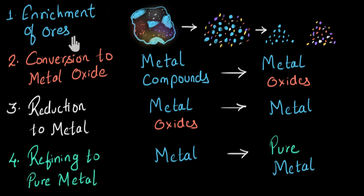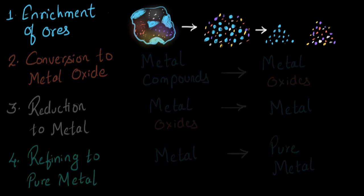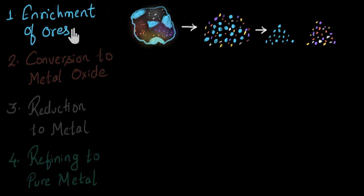Now let's look at each step in a little bit more detail. So the first step is enrichment of ores. Over here, our main objective is to separate the metal compounds from the impurities. So first thing, we break the ore into small pieces. And then we use certain techniques, which are based on the physical and chemical properties of these compounds. And we are able to separate them.